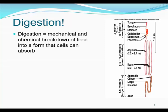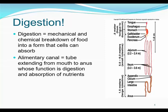Digestion is defined as the mechanical and chemical breakdown of food into molecules that can be absorbed. In other words, the macromolecules are broken down to the building blocks. This occurs in the alimentary canal, which is essentially an open tube from mouth to butt. The organs of the digestive system through which food does not pass are called accessory organs. These include the pancreas, gallbladder, and liver, and sometimes salivary glands are also included on this list.